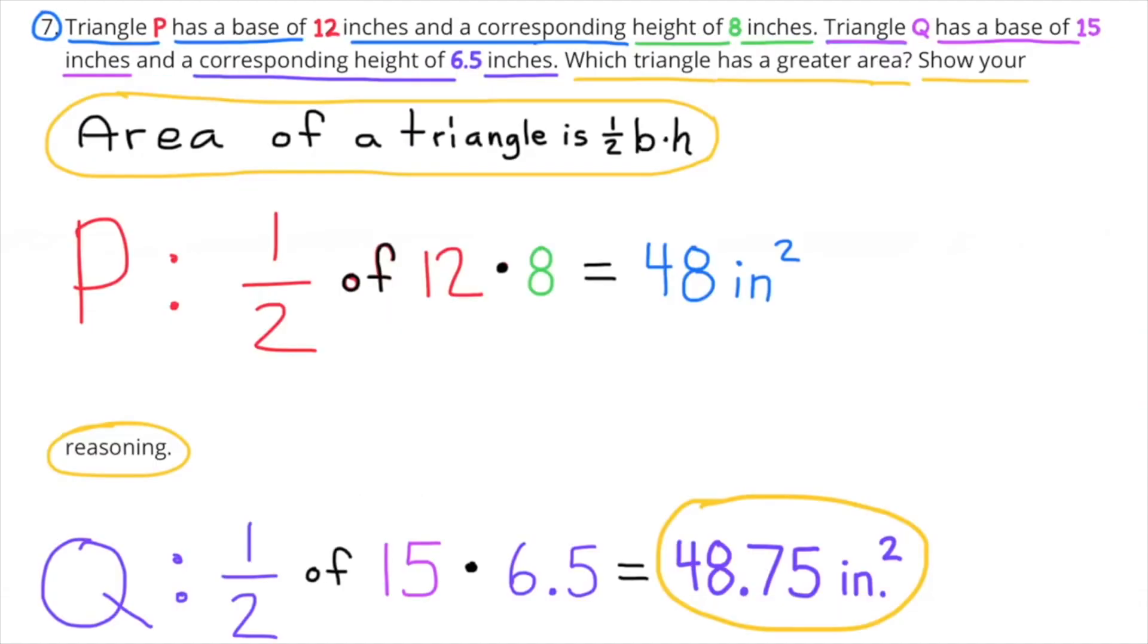Number 7: Triangle P has a base of 12 inches and a corresponding height of 8 inches. Triangle Q has a base of 15 inches and a corresponding height of 6 and 5 tenths inches. Which triangle has a greater area? Show your reasoning. Remember the formula for an area of a triangle is half the base times the height. Triangle P: half of 12 times 8 equals 48 inches squared. And triangle Q: half of 15 times 6 and 5 tenths equals 48 and 75 hundredths inches squared. So triangle Q has the greatest area with 48 and 75 hundredths inches squared.